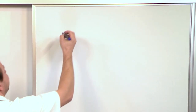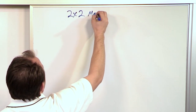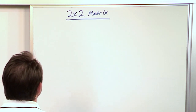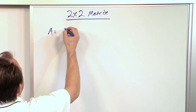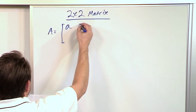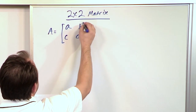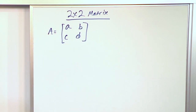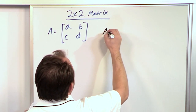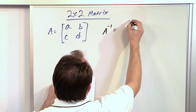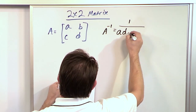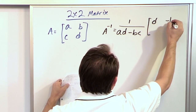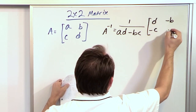Now for a 2x2 matrix there is a shorthand way of calculating the inverse. If you have a matrix A with elements labeled A, B, C, and D, then the inverse of this matrix is one over the quantity A times D minus B times C, multiplied by the matrix with elements D, negative B, negative C, and A.